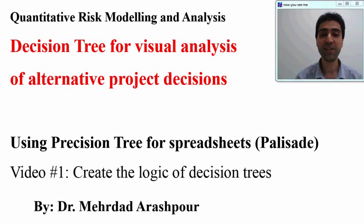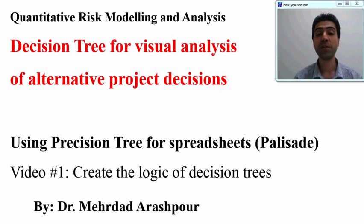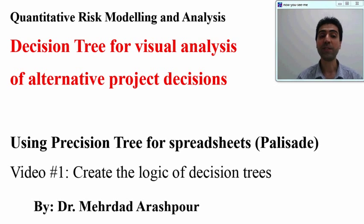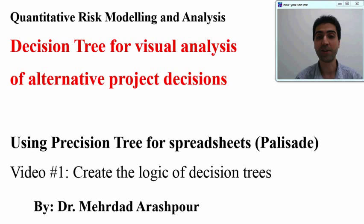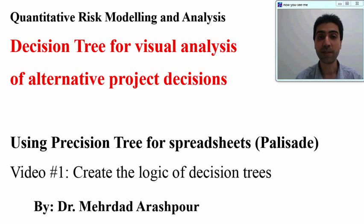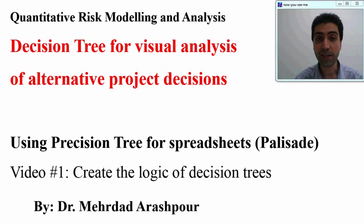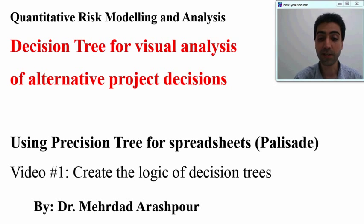Hi everyone. This is the first video in a series of recordings about using decision trees for visual analysis of alternative project decisions. Decision trees are tree-like graphs that show the process of decision making and its consequences, including chance event outcomes, resource costs, and utility. We will be using PrecisionTree, which is a useful add-on for Excel spreadsheets.